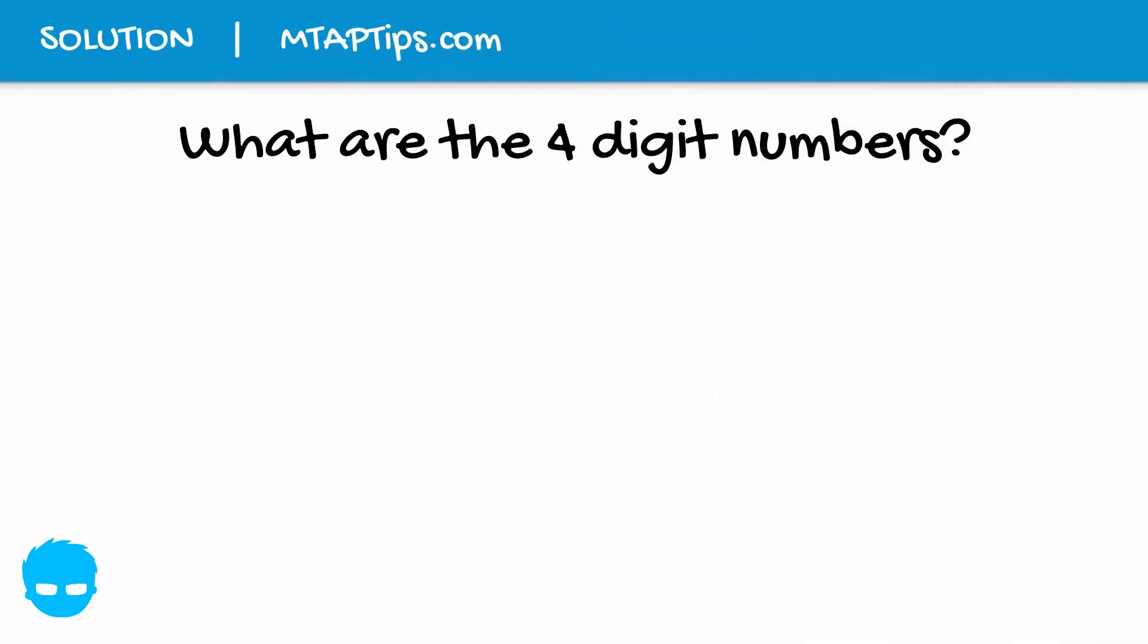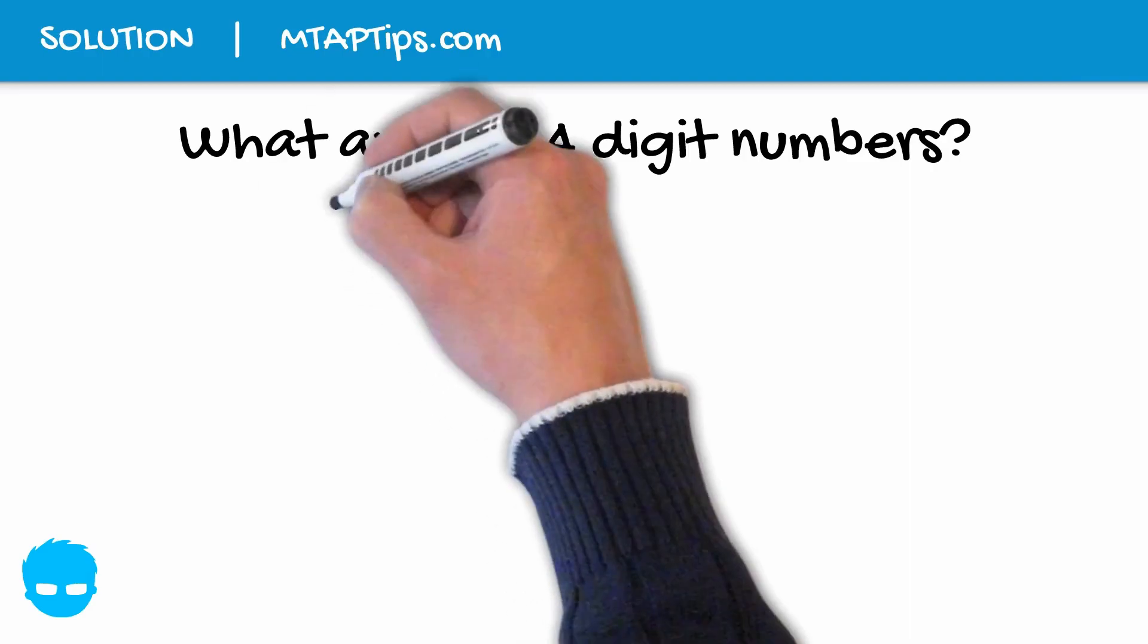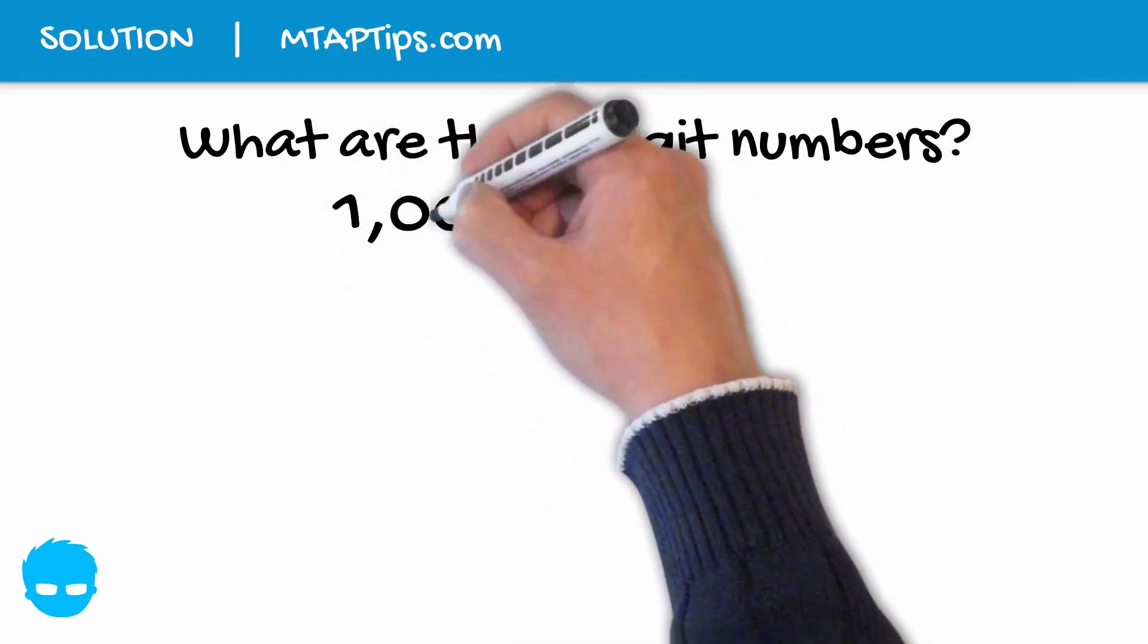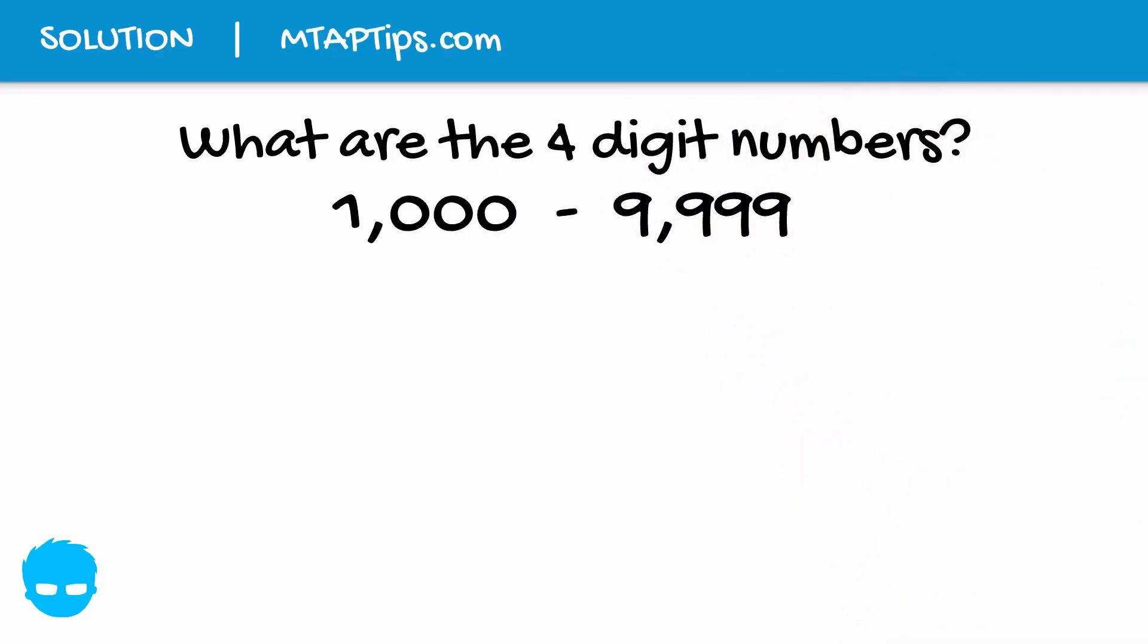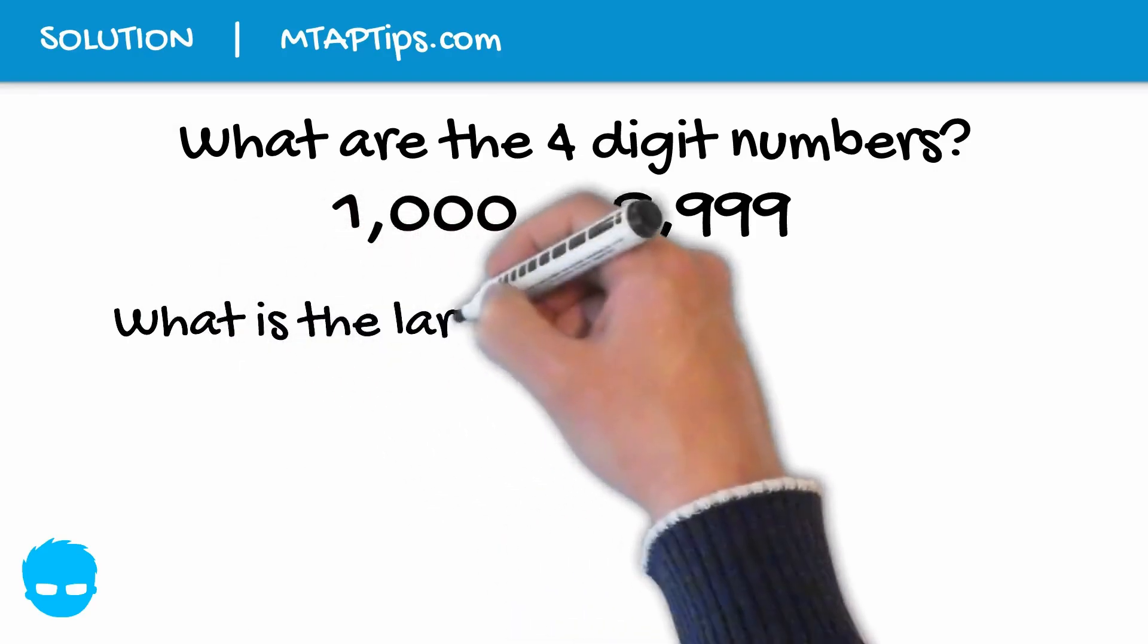But what are those 4-digit numbers? 4-digit numbers start from 1,000 up to 9,999. Because if you reduce 1 from 1,000, it will be 999, which is only 3 digits. Also, if you add 1 to 9,999, it will be 10,000, which will be a 5-digit number already.